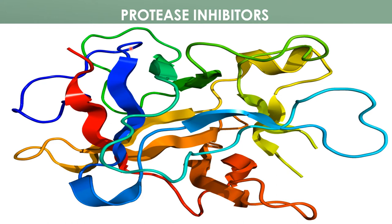Protease inhibitors interfere with the digestive enzymes of insects, resulting in nutritional deprivation and causing death of the insects. According to their specificity, proteinase inhibitors can be divided into four classes: serine protease inhibitors, cysteine protease inhibitors, aspartic protease inhibitors, and metalloprotease inhibitors, as well as bifunctional alpha-amylase/protease inhibitors.